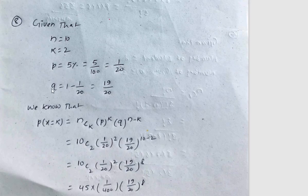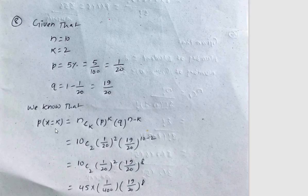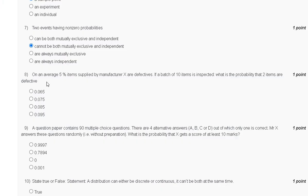Here n = 10, k = 2, p = 5% = 1/20, and q = 1 − 1/20 = 19/20. Using the binomial formula P(k) = C(n,k) × p^k × q^(n−k), and substituting these values, we get 0.075. The correct answer to question eight is option B.